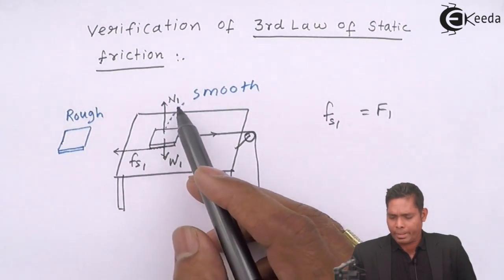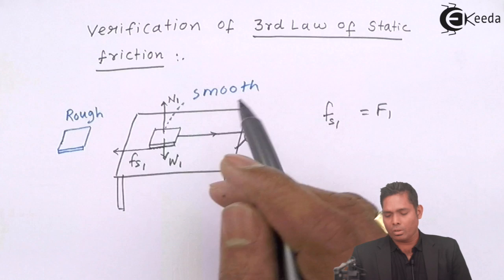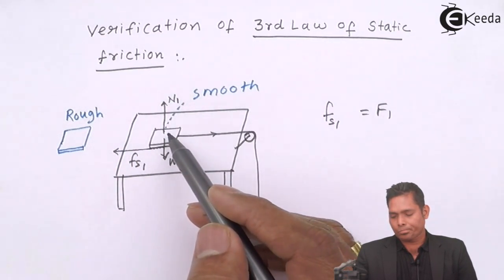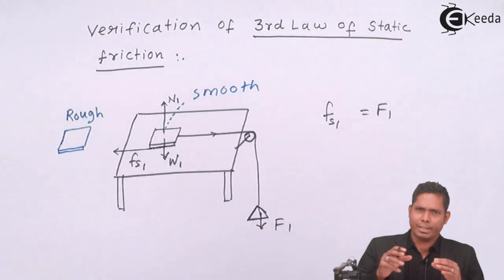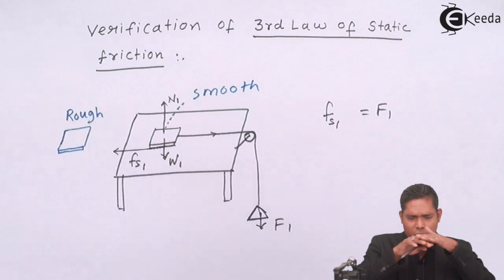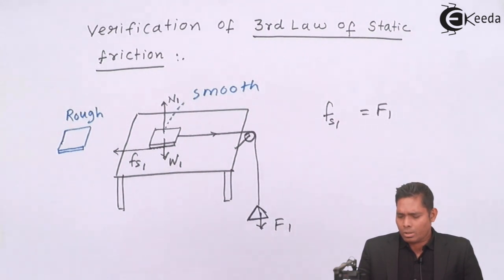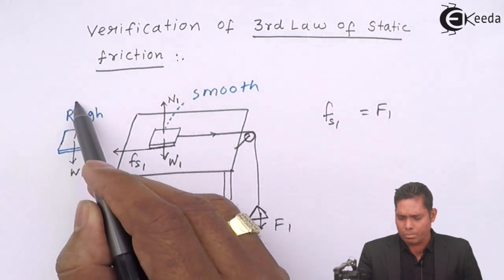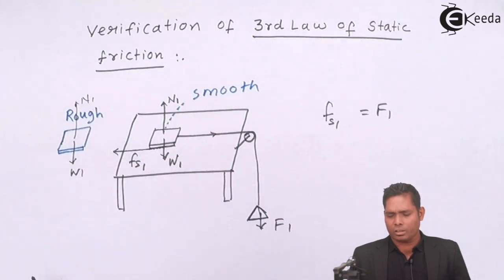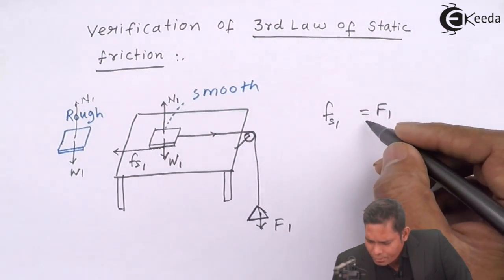I will make this value constant because the normal reaction should remain the same, so I will not change the weight of the block. I will take the same block but one whose surface is slightly smooth and the other one having rough surfaces. The weight is not going to change, and the normal reaction will be n1. Only the roughness and smoothness of the surface changes. So in this first case, fs1 is f1.